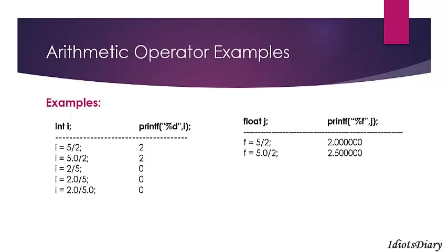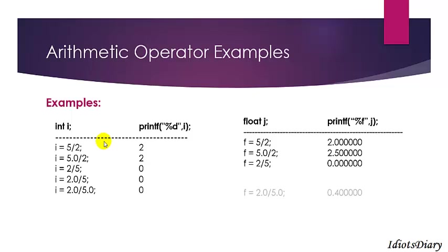In the next expression, we store the result of 5.0 divided by 2 into f. Since 5.0 is a float type, the result is 2.5 and f is able to hold this. By default, float shows 6 digit precision, so when we display the result of f, it is displayed with 6 digit precision. In the next expression, 2 divided by 5 into f gives 0.0 because both are integers. In the next example, 2.0 divided by 5.0 stored into f gives 0.4, because both are floating type values.